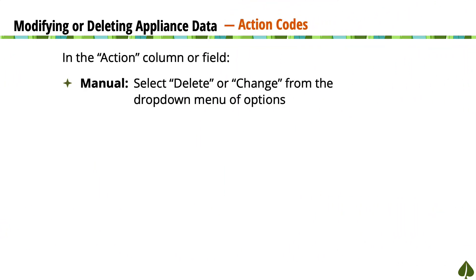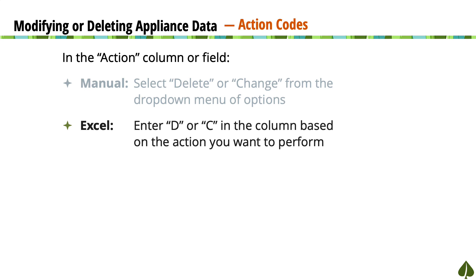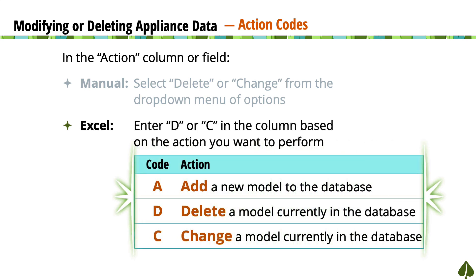When changing or deleting product data, either manually or through Excel, you'll use action codes to indicate what action you wish to perform. When modifying product data manually, select Delete or Change from the action dropdown menu. When modifying product data with an Excel upload, you'll enter action codes in the action column of the spreadsheet. Enter A to add a new model to the database, D to delete a model currently in the database, and C to change a model currently in the database.